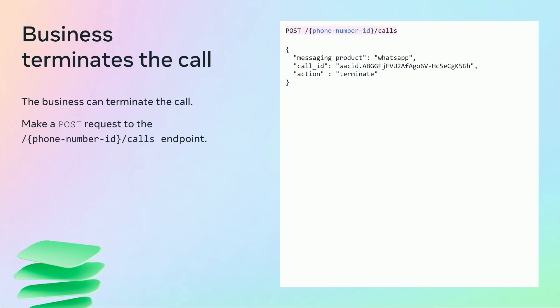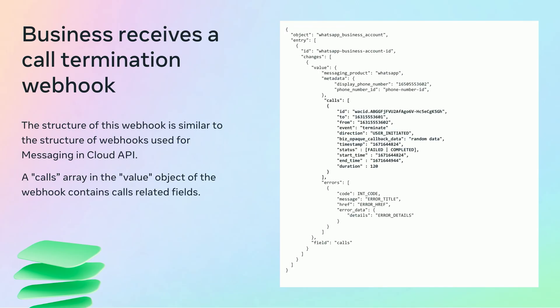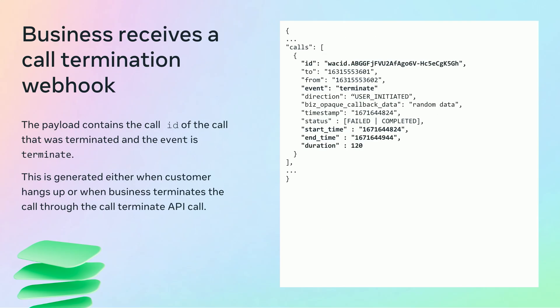Once the call is over, the business can terminate it by making a POST request to the slash phone_number_id slash calls endpoint, providing the call_id and setting the action parameter to terminate. After the call is terminated by either the business or the user, the business will receive a call termination webhook. The calls array contains the ID of the terminated call, its start and end times, and its duration in seconds. The event parameter will be set to terminate. This is the last step for receiving calls from customers.